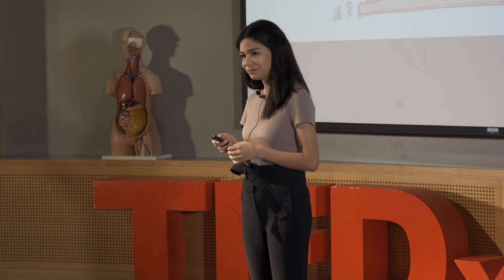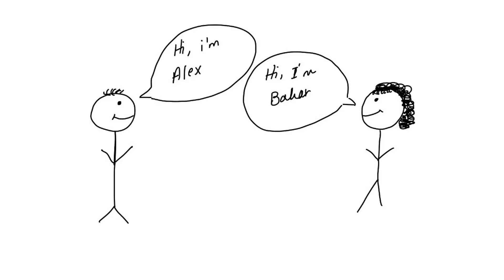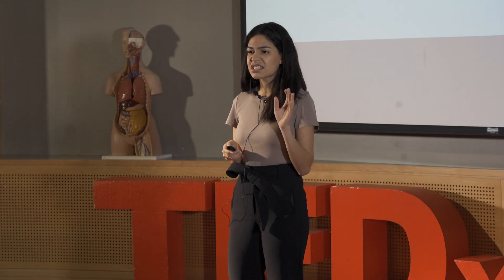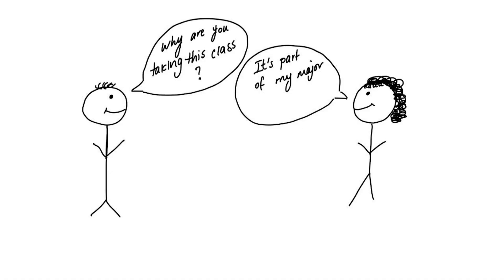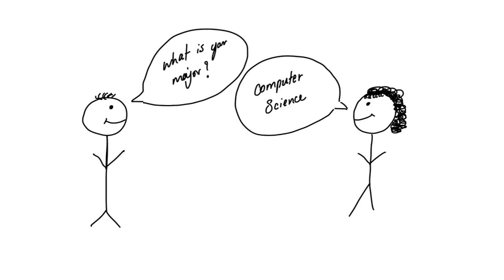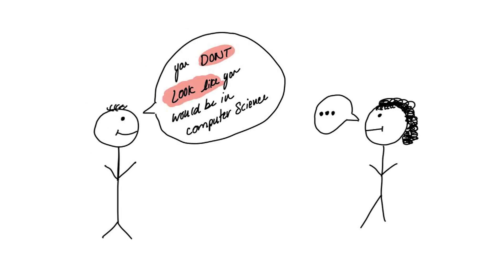And it went a little like this. Hi, nice to meet you. I'm Alex. To which I replied, Hi Alex, I'm Bahar. How are you enjoying the class? Yeah, this class is tough, to be honest. Speaking of which, why are you taking it? Oh, it's part of my major, actually. Oh cool, what's your major? Computer science, I replied. Oh really? You don't look like you would be in computer science.